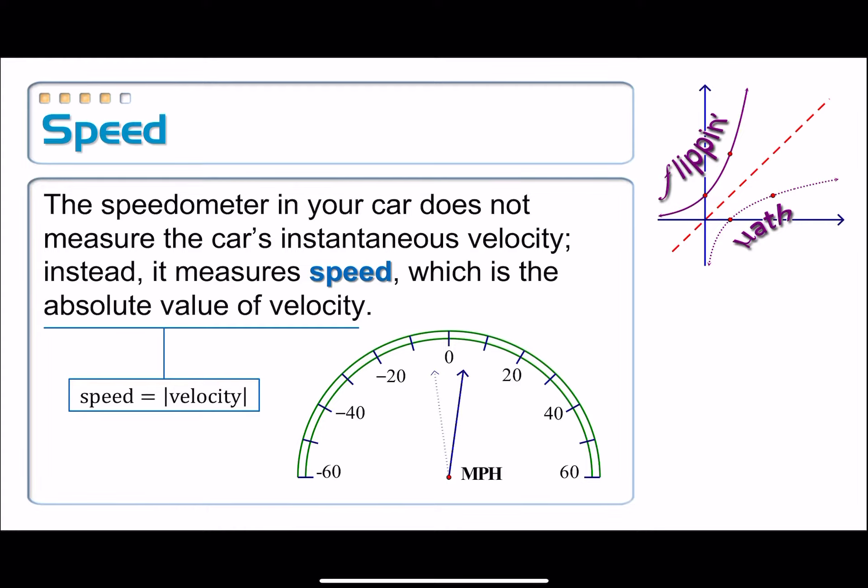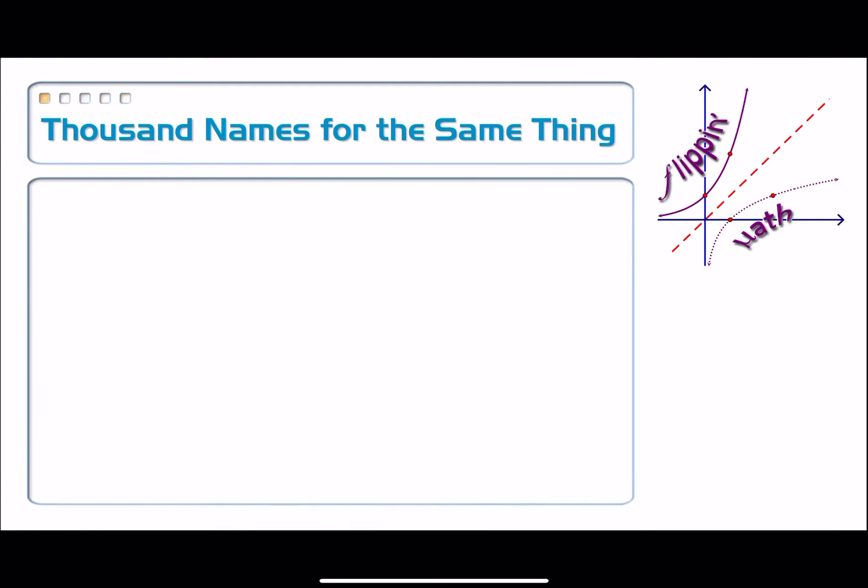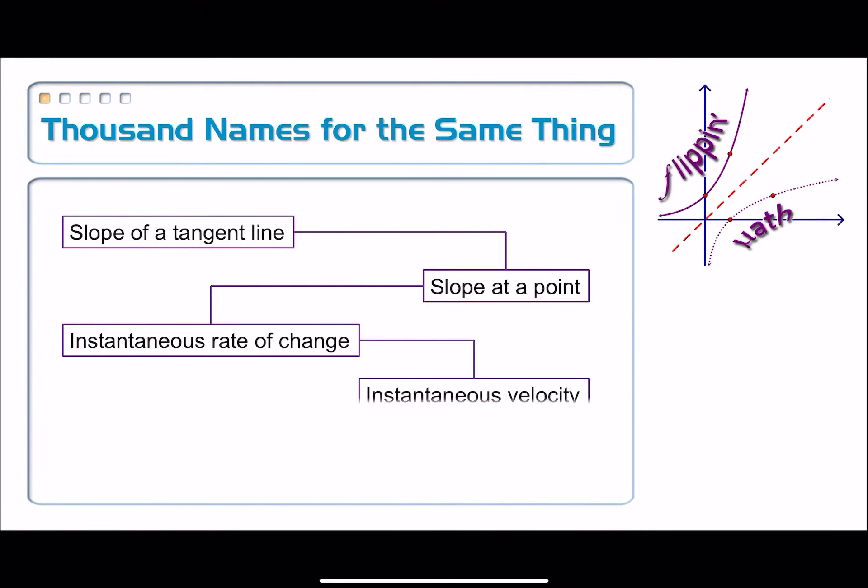All right, to wrap up here, we have a thousand names basically for the same thing. We've been talking about finding the slope of a tangent line. Finding the slope of a tangent line is the same thing as finding the slope of the function at a particular point. It's the same thing as finding the instantaneous rate of change.